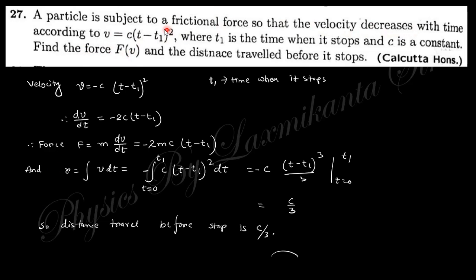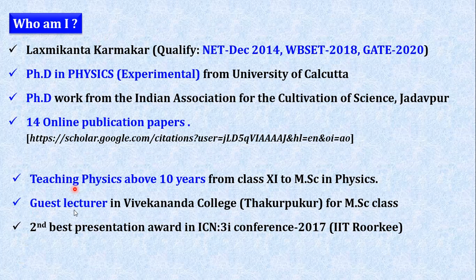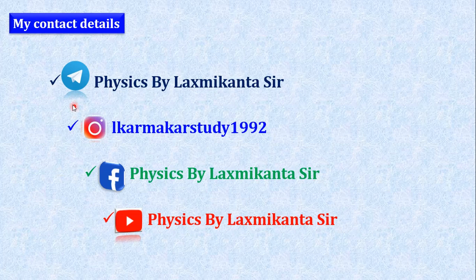Next question: a particle is subjected to a frictional force such that velocity decreases with time. Taking the derivative gives the force expression. Integrating velocity gives position. The distance traveled before stopping is c/3, and the stopping time t1 is found by integrating from 0 to t1.